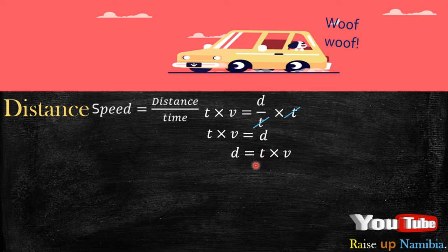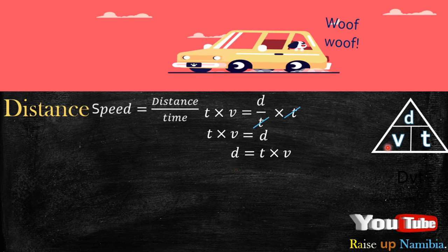Now some people are not familiar or don't really like making a certain letter subject of the formula, so they prefer using the triangle, which is also completely fine. So for people that use the triangle, if they are looking for speed, they cover speed and they know it's distance divided by time. If they are looking for distance, they cover the D and it's speed multiplied by time. And if they are looking for time, the equation will be distance divided by speed.